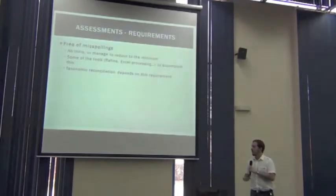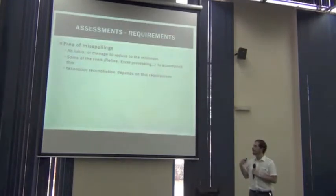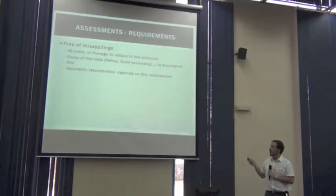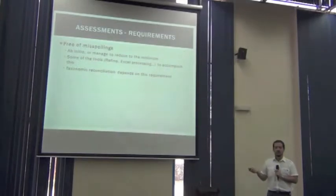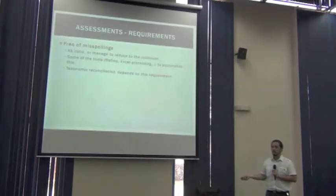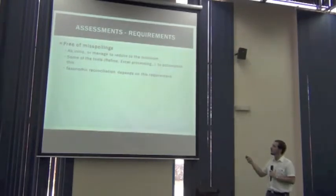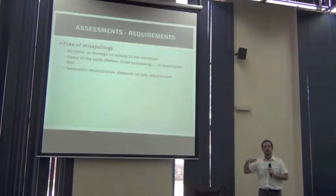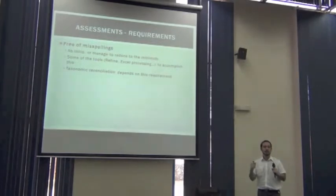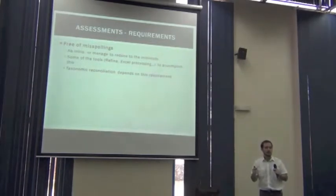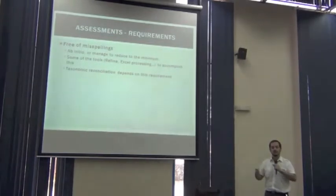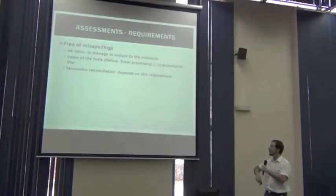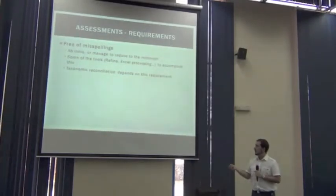So this is what I meant with the reliable list of names to check our data. But still, our data has to meet some requirements in order to be usable. So our taxonomic information must be free of misspellings. It can be free of misspellings initially from the beginning, or we can apply some tools to reduce misspellings to the minimum. If we have misspelled names, we won't be able to check them against our sources.